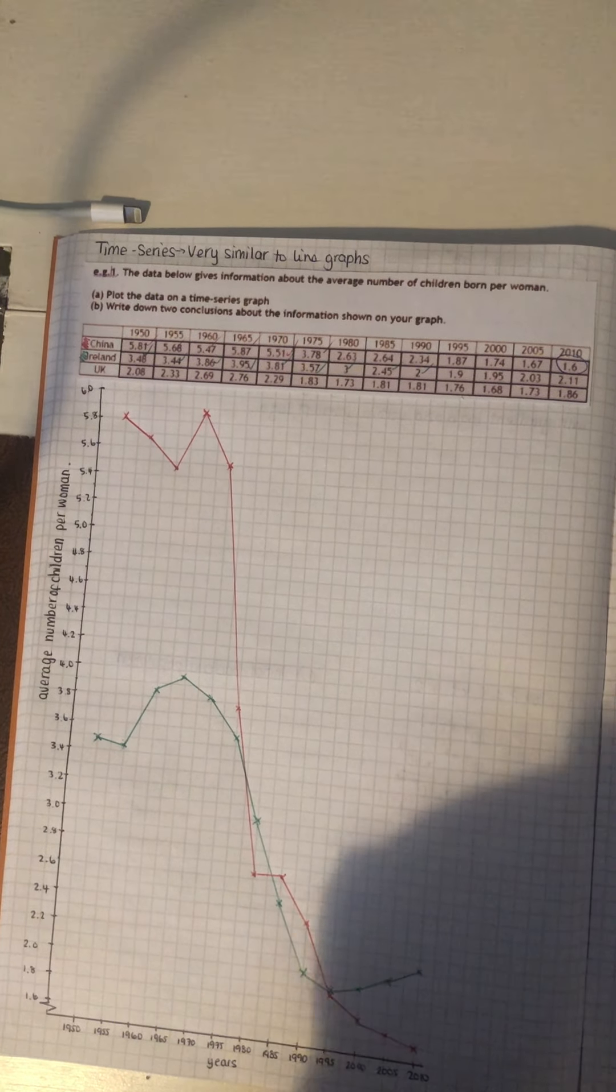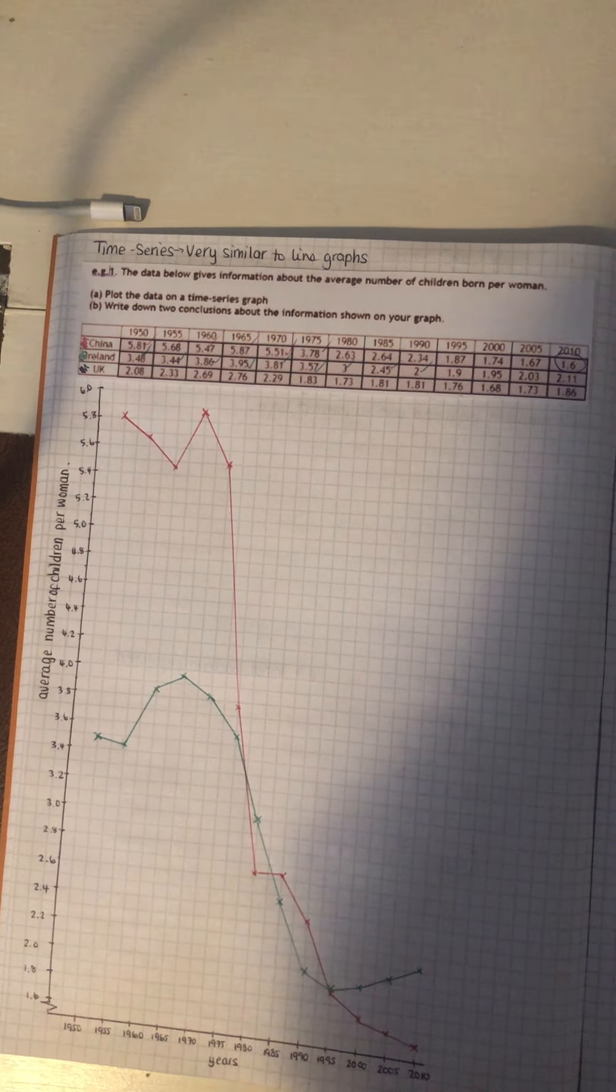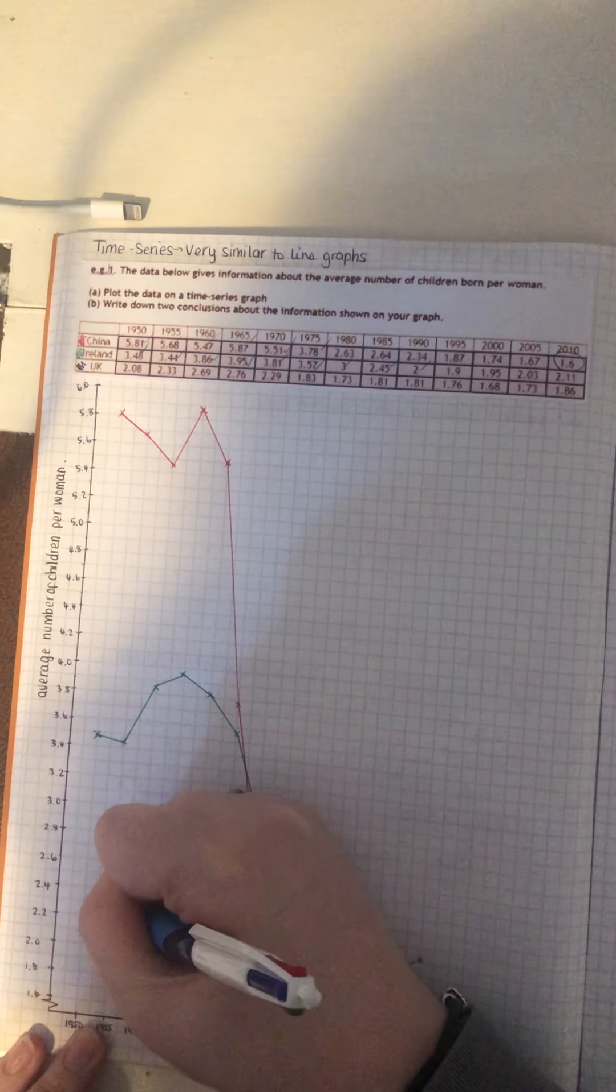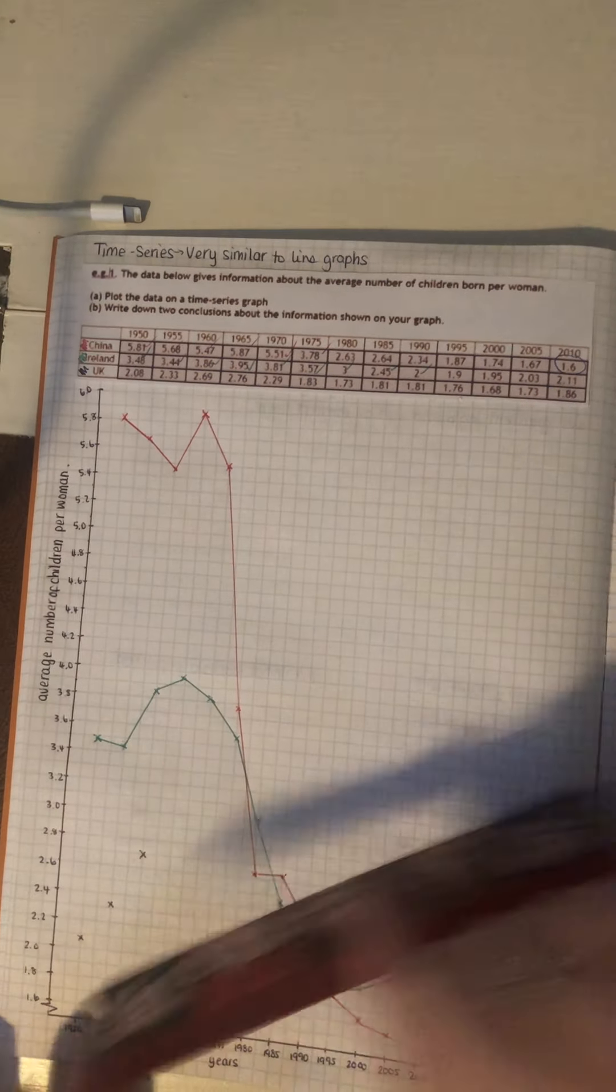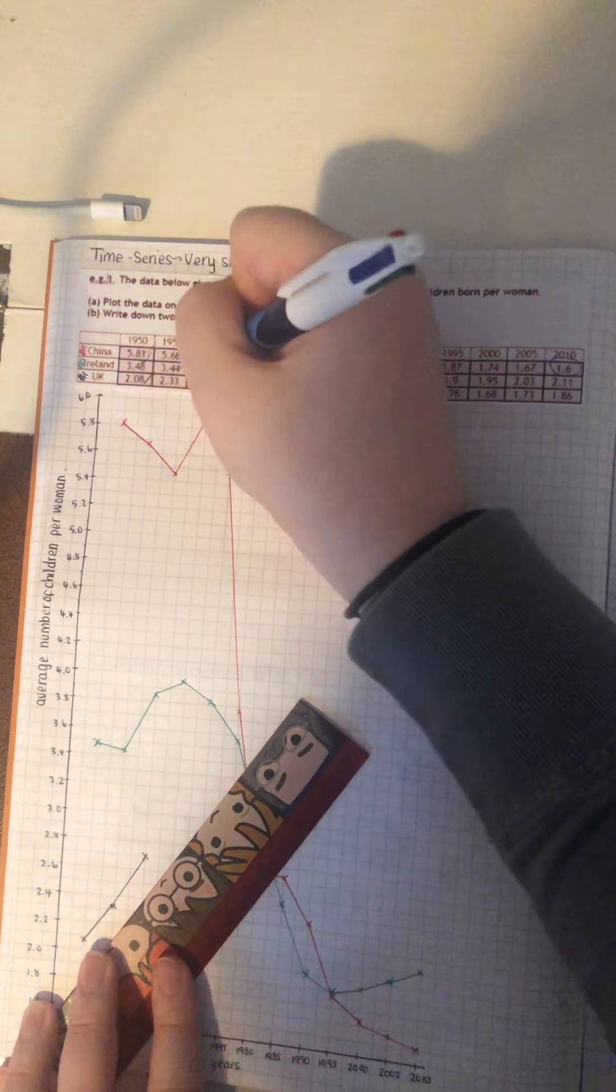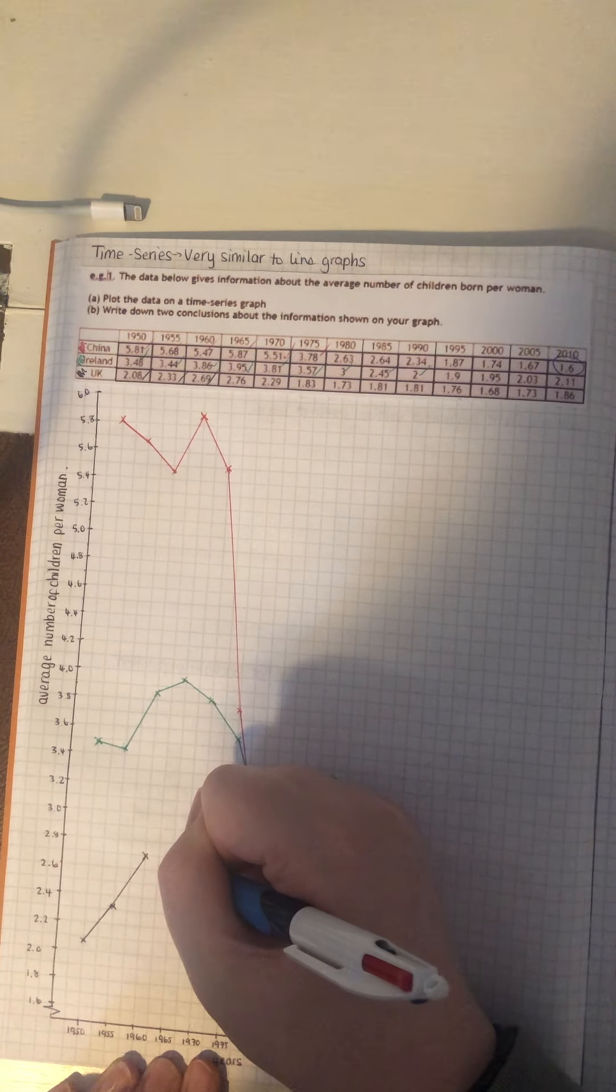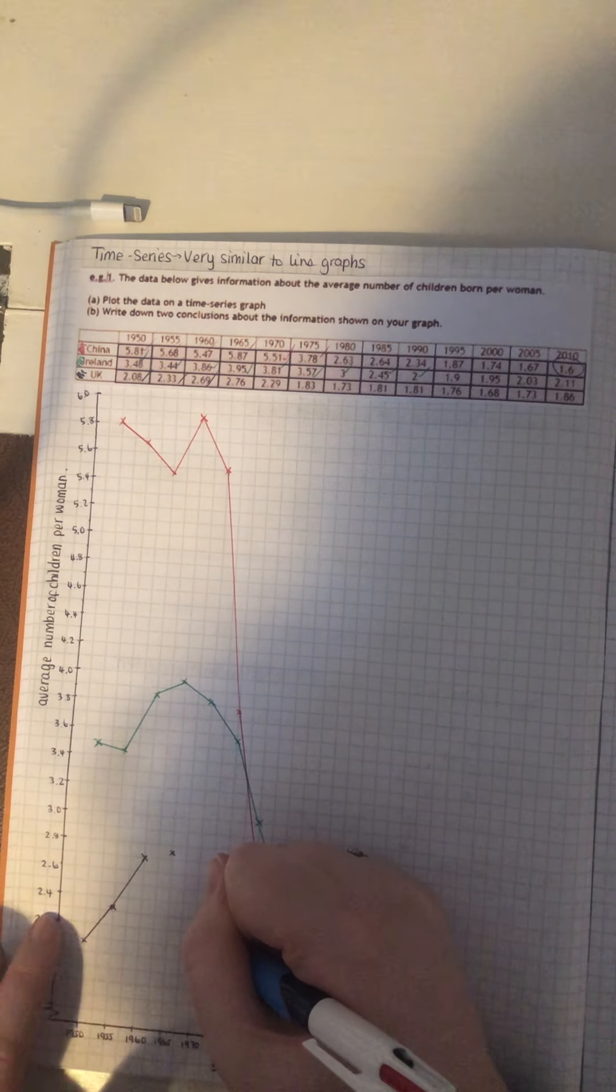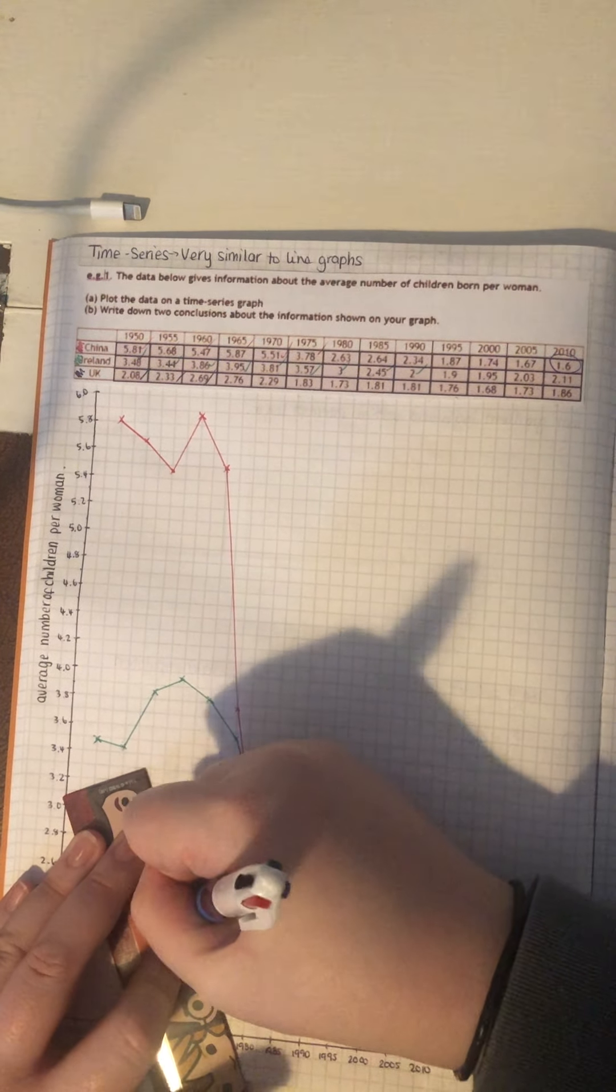And then finally, we've got the UK. So, hopefully the UK should be fairly similar to Ireland, I would have thought. So, first one starts off quite low. So, we're at 2.08 in 1950, so give or take there. Then it's 2.33. Then 2.69, roughly 2.7. 1965 is 2.76. So, about there. Then it drops. So, 1970 is 2.29, roughly 2.3.